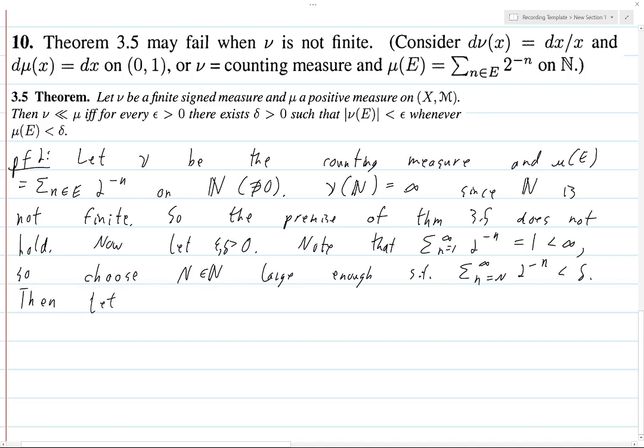Then, let E be the set {N, N+1, N+2, ...}. Then, μ(E) is, by definition, the sum over all N in E of 2 to the minus N. But this is just sum from N equals capital N to infinity of 2 to the minus N, which is less than delta.